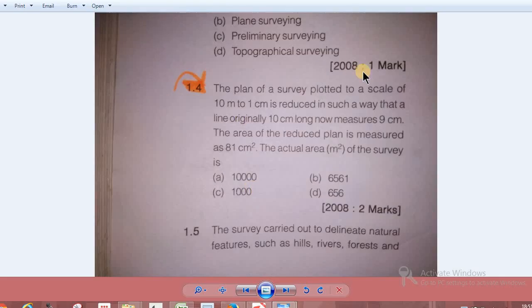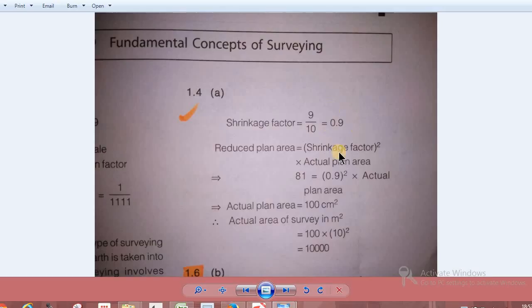The plan of survey is plotted to a scale of 10m to 1cm. It is reduced in such a way that the line originally 10cm long now measures 9cm. The area of reduced plan is measured as 81. The shrinkage factor is 0.9, and you have to reduce the area accordingly to find the actual area.